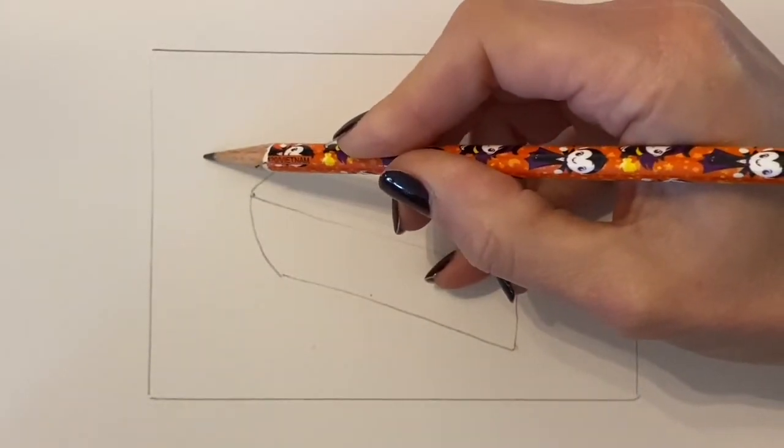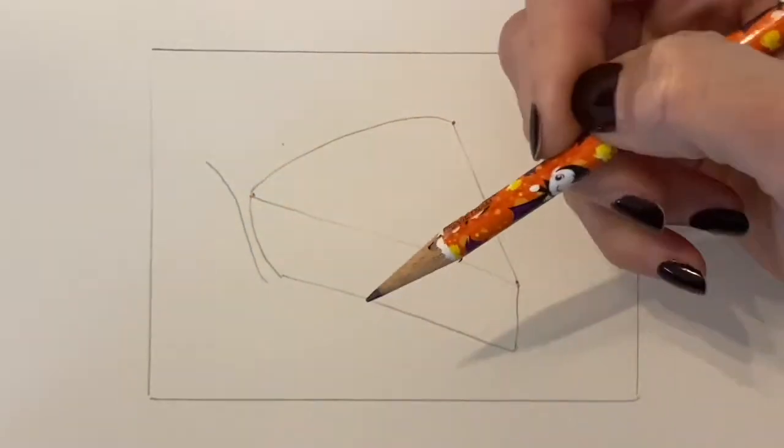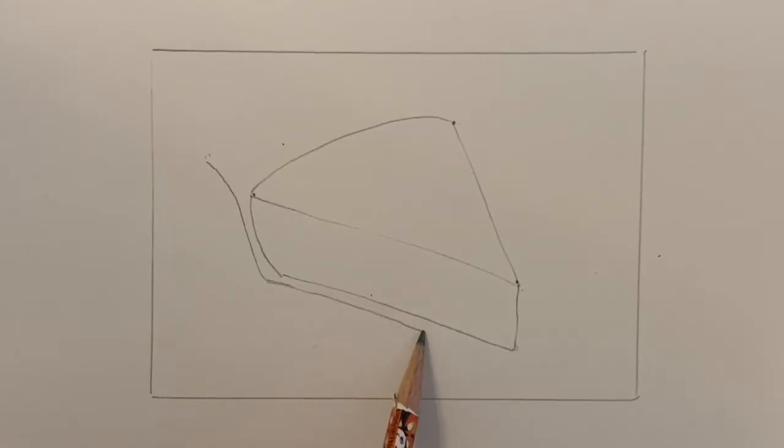For the crust of the pie, beginning a little bit to the left so that I can make a nice curve here, I'm going to draw a line down and follow along the bottom edge to show the thickness of the crust.